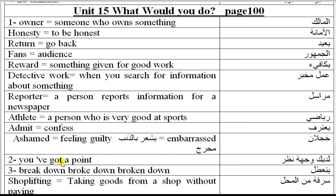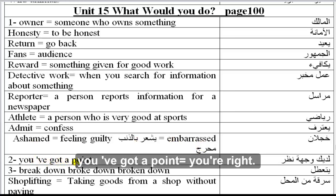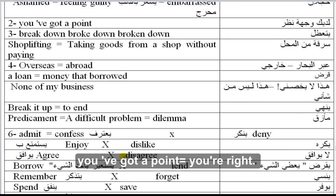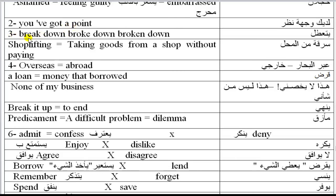'You've got a point.' Note: the T sounds like D between two vowels — 'got a.' 'You've' is a contraction of 'you have.' Break down — broke down — broken down.